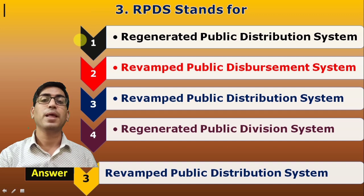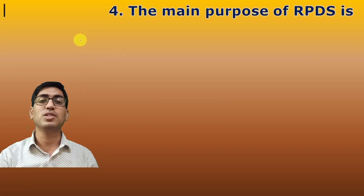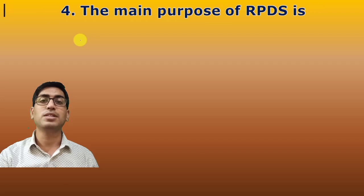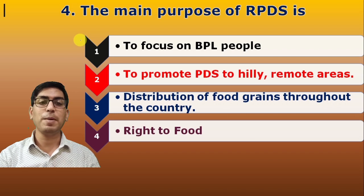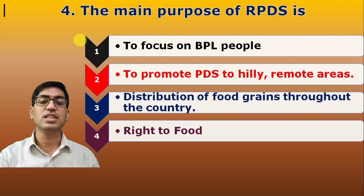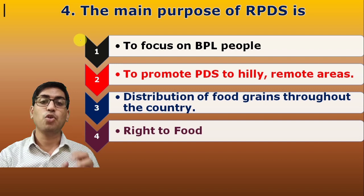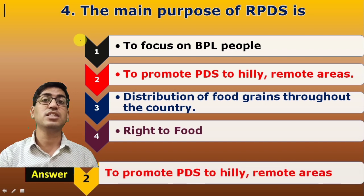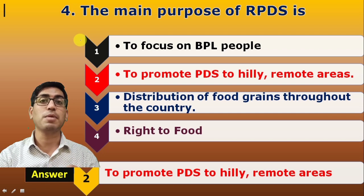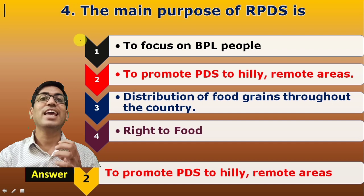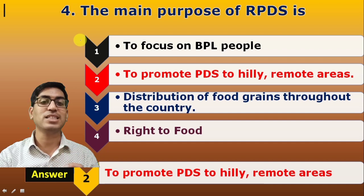Fourth question: The main purpose of RPDS. Options include: to focus on below poverty line people, to promote PDS to hilly and remote areas, distribution of food grains throughout the country, and right to food. The answer is the second one — to promote PDS to hilly and remote areas. Because the Revamped Public Distribution System aims to reach hilly and remote places.